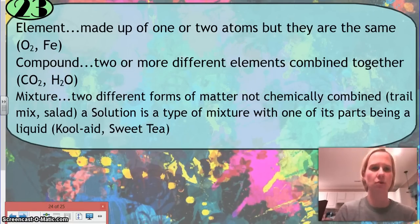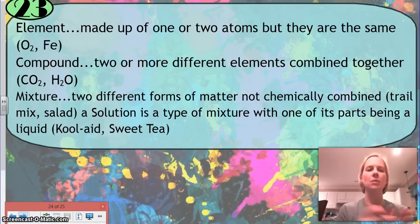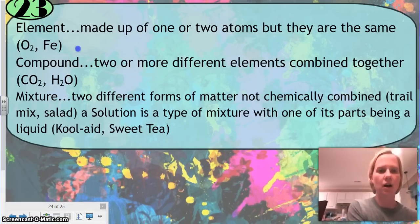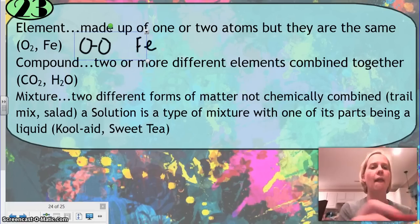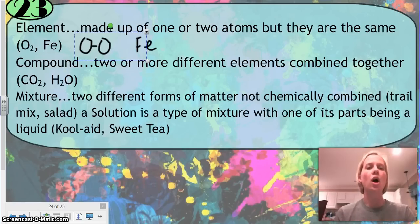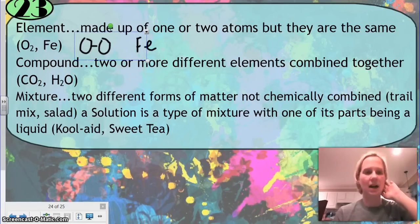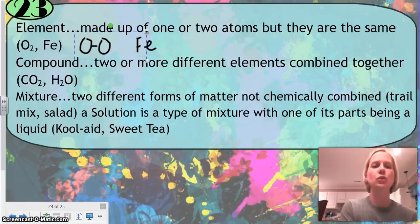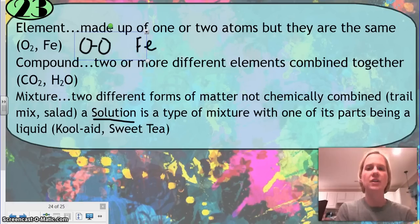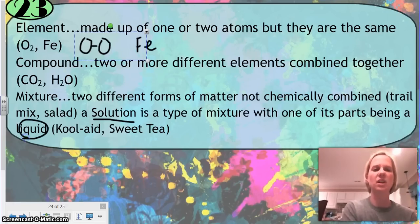Element compound mixture solution. An element is made up of one or two atoms, but they are the same. O2 is simply an oxygen bonded to an oxygen. And then we have Fe, which would just be floating around. That's an element. Single thing from the periodic table. A compound is taking two or more different elements and combining them together. So, we have carbon dioxide, which is carbon and oxygen, and water, which is hydrogen and oxygen. A mixture is taking two different forms of matter and not chemically combining them. That's when I take sugar and water, or if I take almonds and cashews and put them together. A solution is a type of mixture. The difference being is that we know that with a solution, one of its parts is going to be a liquid.